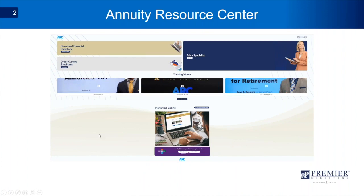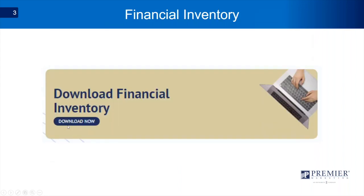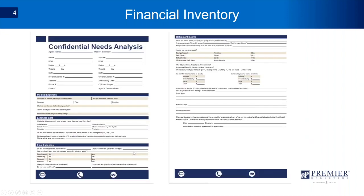This is the homepage for the Annuity Resource Center. After you log into the Premier website and go through the agent portal, you'll be able to access it. There are different sections here and we're going to break down each one. Starting with the Financial Inventory Worksheet — there's a place where you can download a financial inventory worksheet, or fact finder, so you can have a needs analysis that covers questions to open up the conversation on annuities and other products. It's pretty extensive — we ask about medical expenses, extended care, final expenses, and retirement or income planning, which leads into a conversation about annuities.